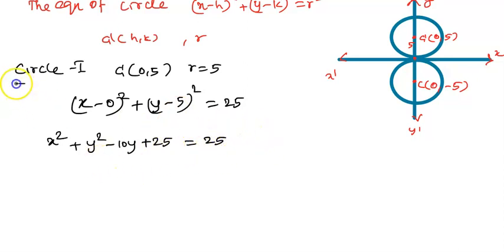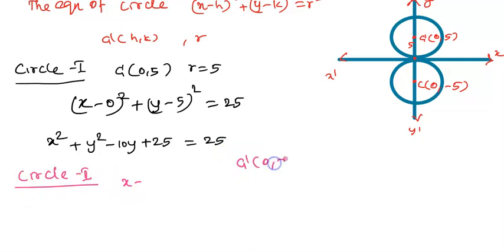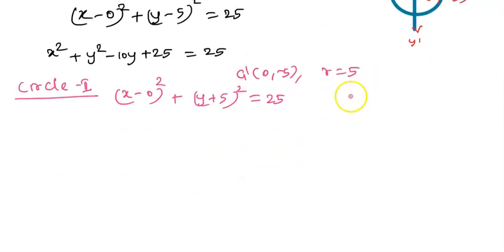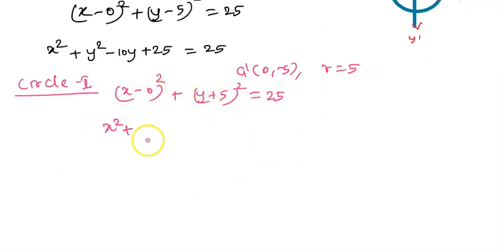For Circle 2, the center point is (0, minus 5) and radius equals 5. So x minus 0, the whole square, plus y minus (minus 5), the whole square, equals r squared, which is 25. Expanding using a plus b whole square equals a squared plus 2ab plus b squared, we get x squared plus y squared plus 10y plus 25 equals 25.